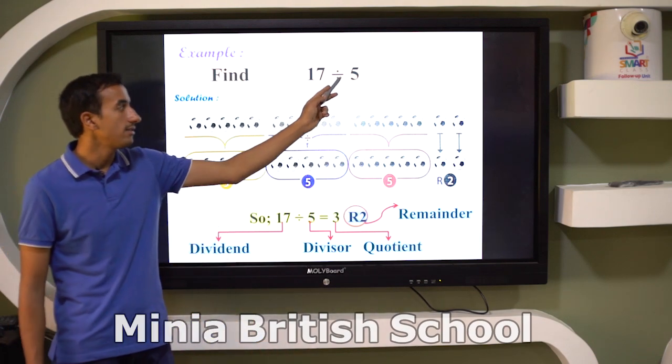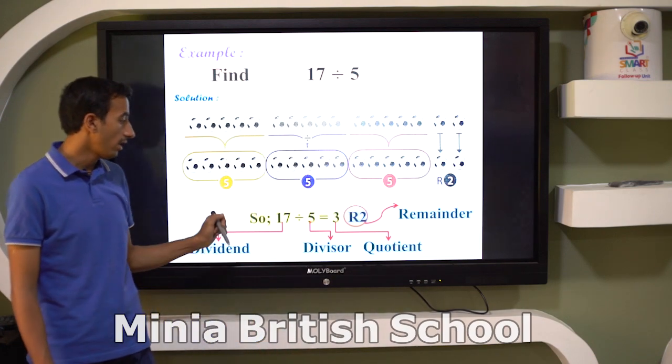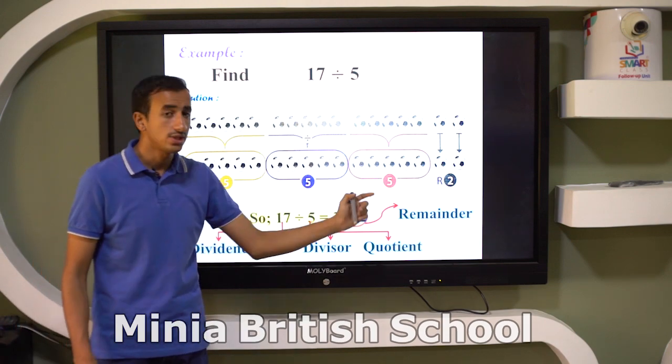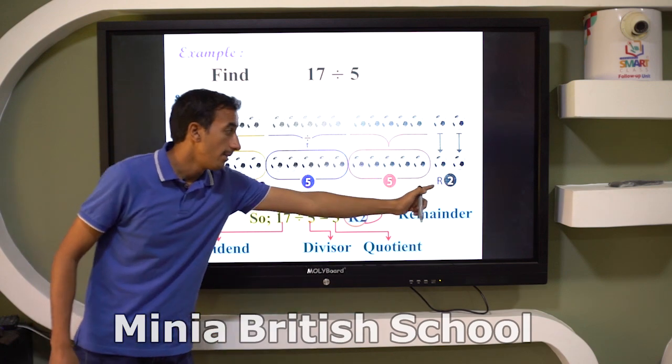So I can write: 17 divided by 5 equals 3 remainder 2. 17 divided by 5 equals three groups with remainder 2.